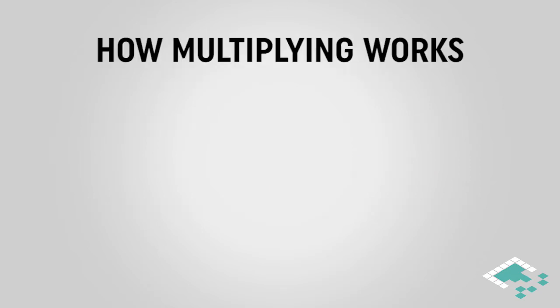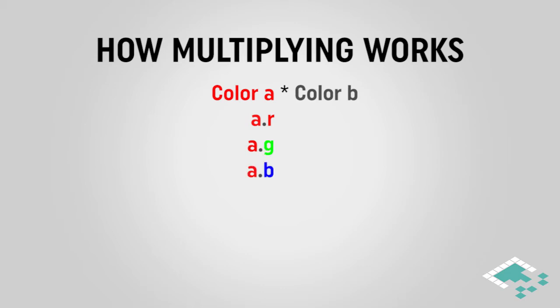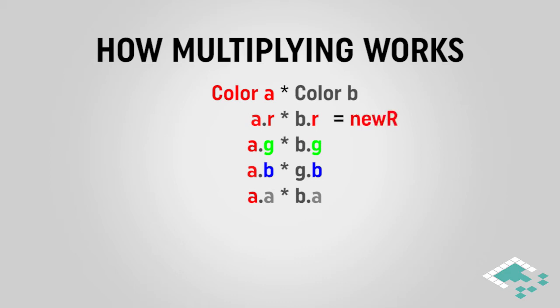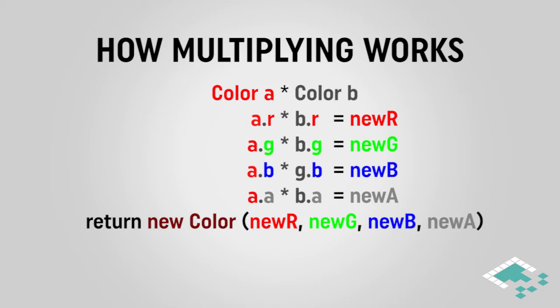So how this is all going to work: we're going to be taking two colors in Unity and multiplying them together. Every color in Unity has four values — red, green, blue, and alpha. The red, green, and blue tell you what color it's going to be and the alpha tells you how transparent it's going to be. When we multiply these, we separate all the values out. We take the first color's red and the second color's red and multiply them to get a new red; we take the greens and multiply them to get a new green, and so on — then we create a new color out of all those new values.